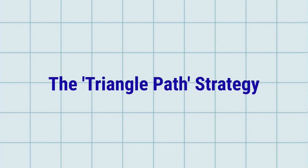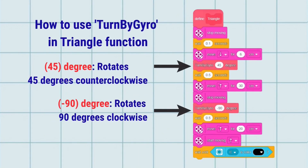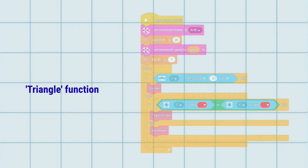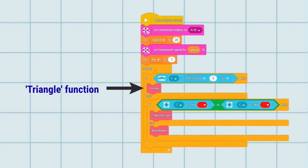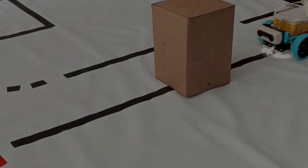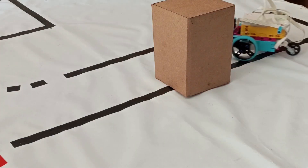The triangle path strategy. To make this strategy work, we created a function called triangle. It uses turn baguero under the hood to turn the robot 45 degrees counterclockwise, then 90 degrees clockwise. Now we can see a SPIKE Prime line-following robot using the triangle path strategy to avoid an obstacle on the track.